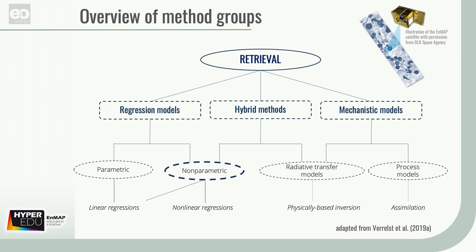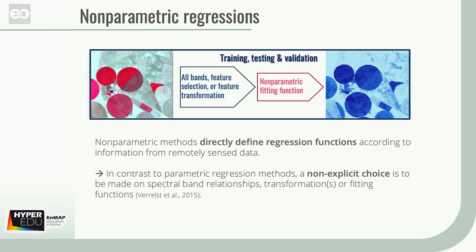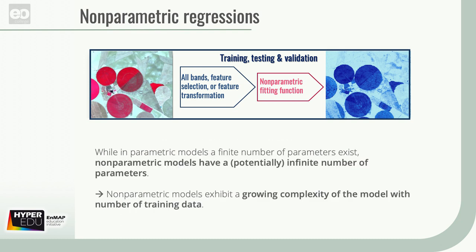Next, the group of nonparametric regressions can be subdivided into linear nonparametric regressions, or chemometrics, and nonlinear nonparametric regressions, known as machine learning. Nonparametric methods directly define regression functions according to information from remotely sensed data. Hence, in contrast to parametric regression methods, a non-explicit choice is to be made on spectral band relationships, transformations, or fitting functions. While in parametric models a finite number of parameters exist, nonparametric models have a potentially infinite number of parameters and exhibit a growing complexity with an increasing amount of training data.